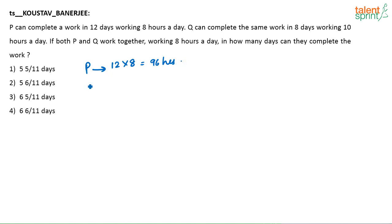Similarly, if you look at Q, Q is completing the same work in 8 days working 10 hours a day. So 8 into 10, Q is completing the same work in 80 hours. In 1 hour, what is the work done by P? P does 1 by 96th of the work. Similarly, in 1 hour Q will do 1 by 80th of the work.